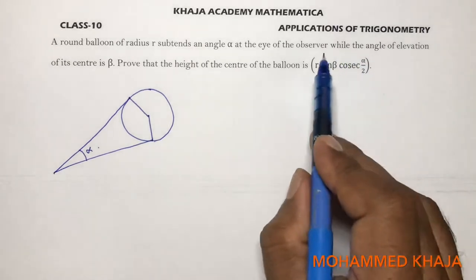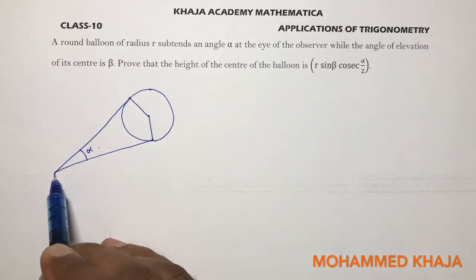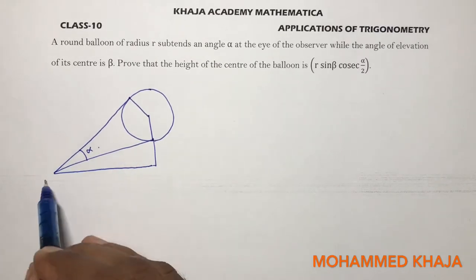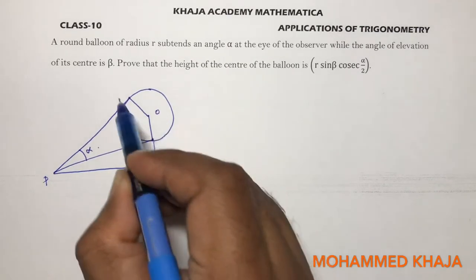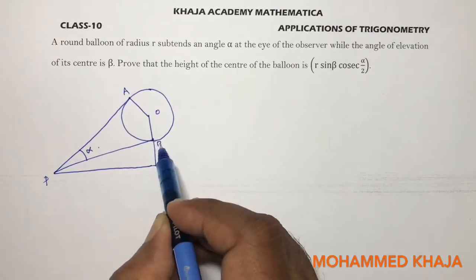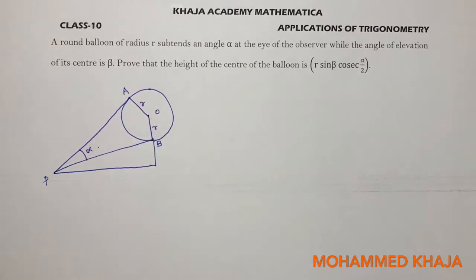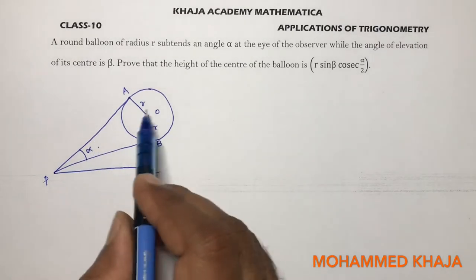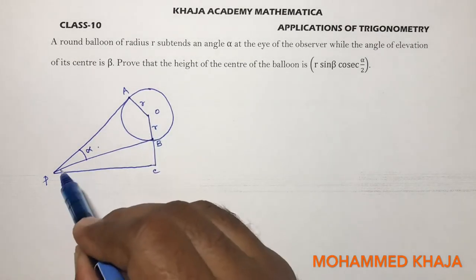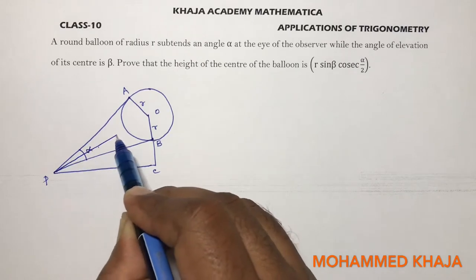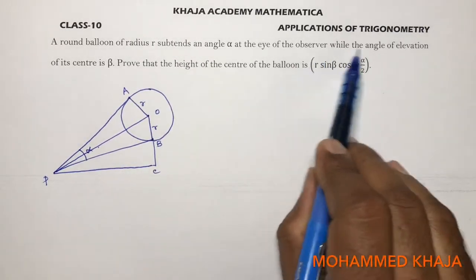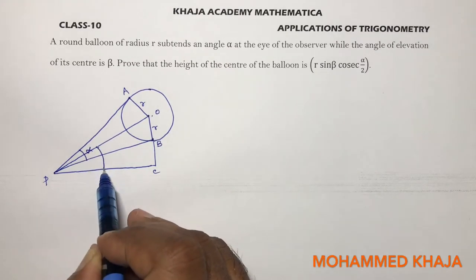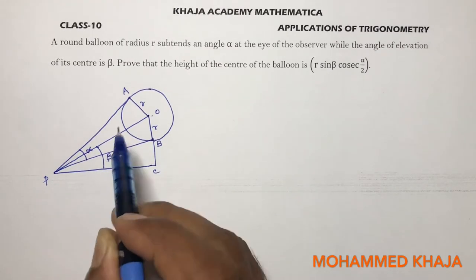Now the angle of elevation of its center — this is the lower ground, this is the center point. A and B are points of contact, and this is radius r. You can take point C. If I join the center here, the angle of elevation of its center — this angle is beta.